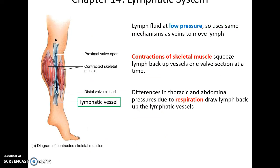Lymph vessels work under very low pressure, so they take advantage of the same mechanisms as veins. They get squeezed by the contractions of skeletal muscles to send the fluid toward the subclavian veins, and also get squeezed by changes in pressure from breathing in the thoracic and abdominal cavities.